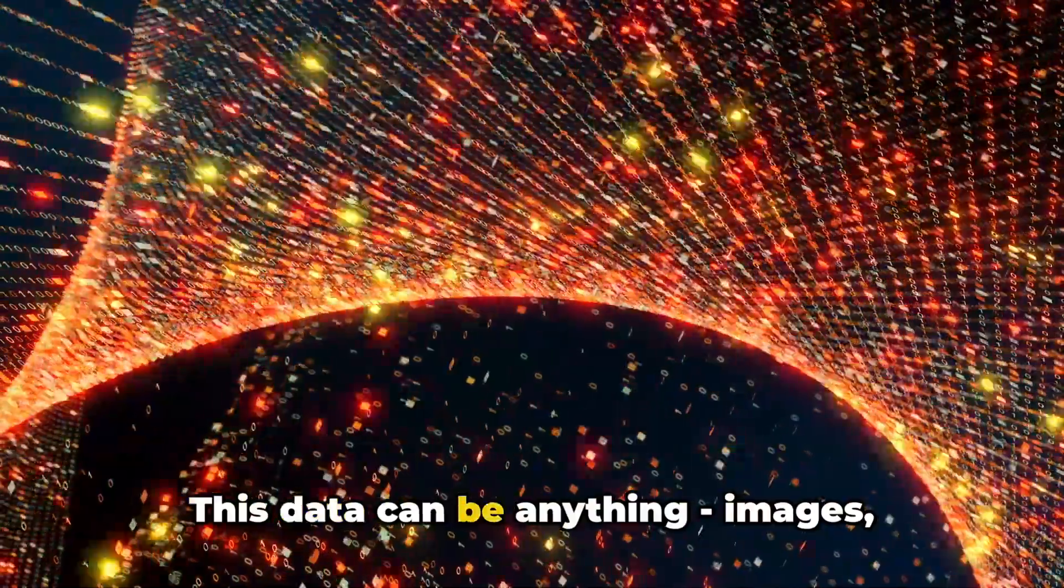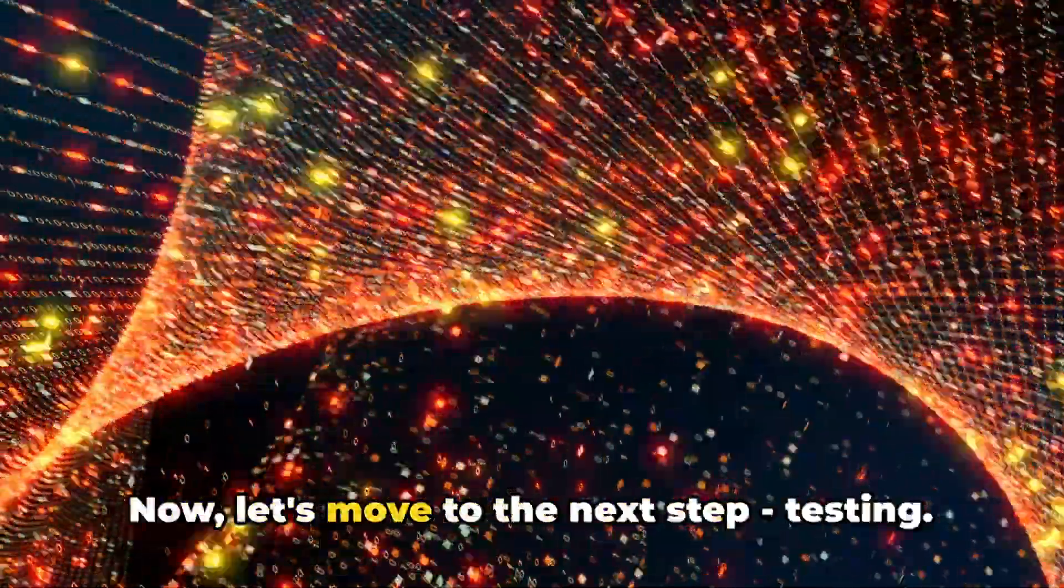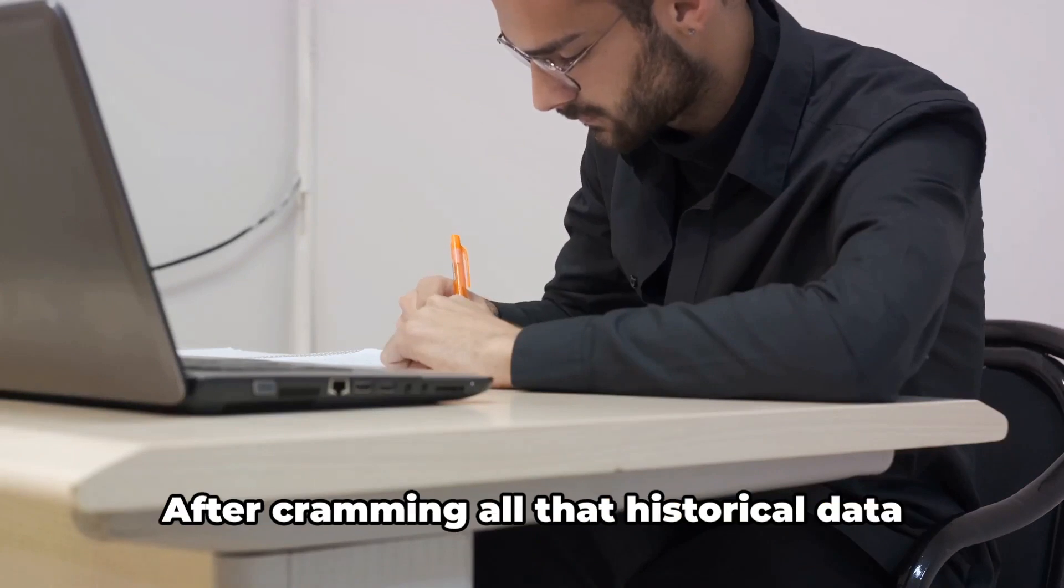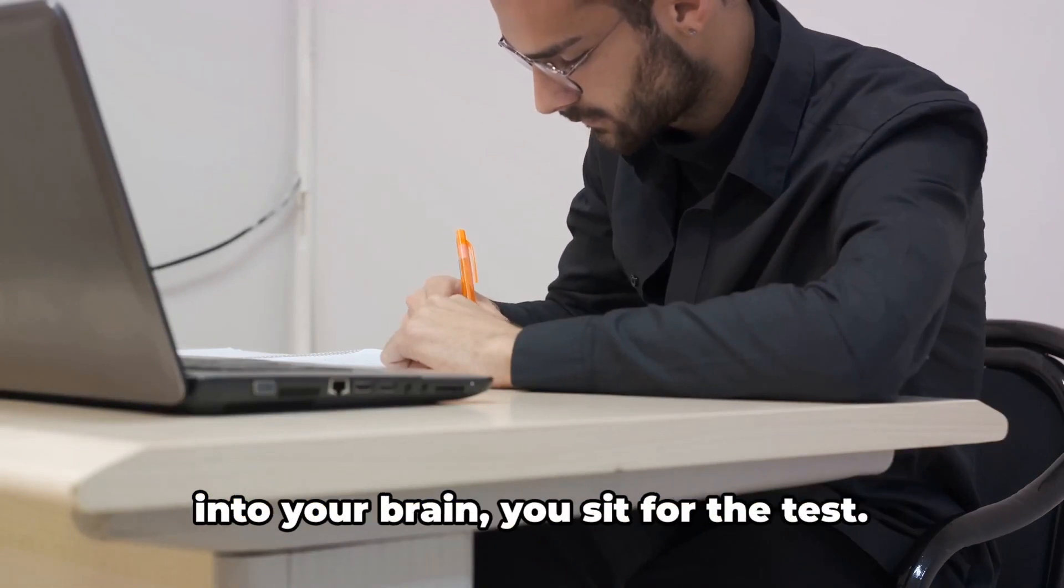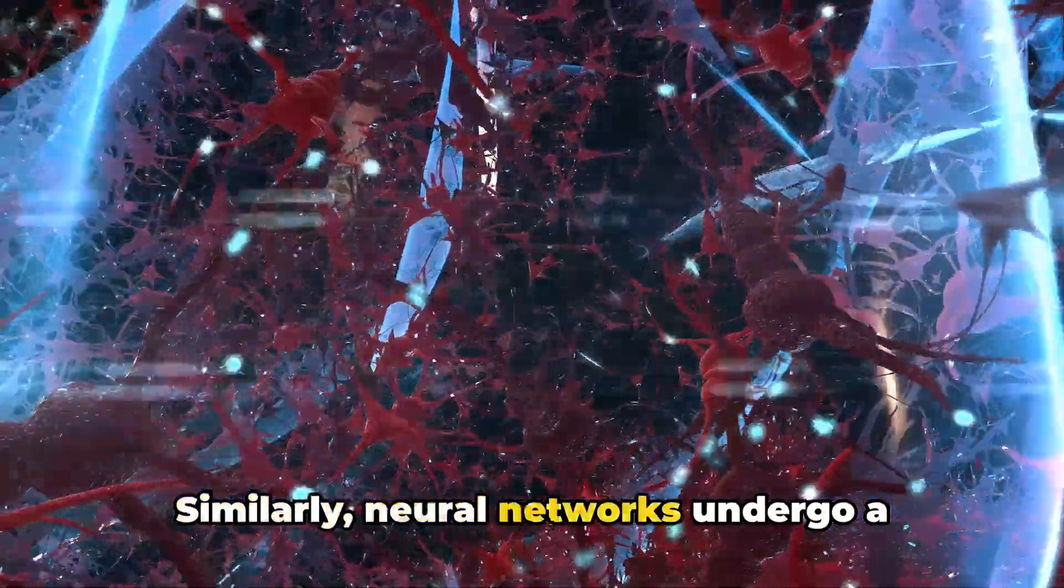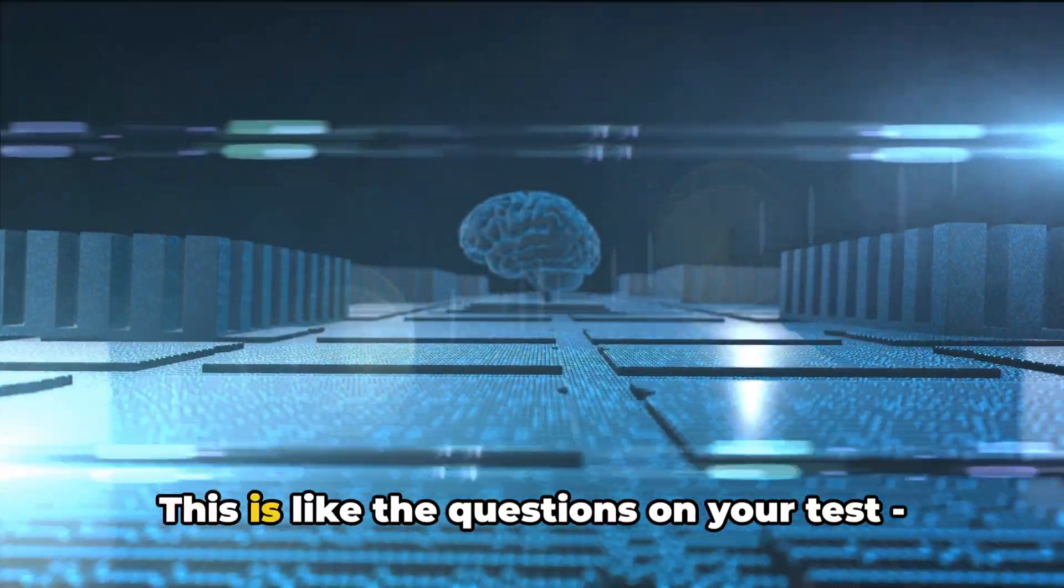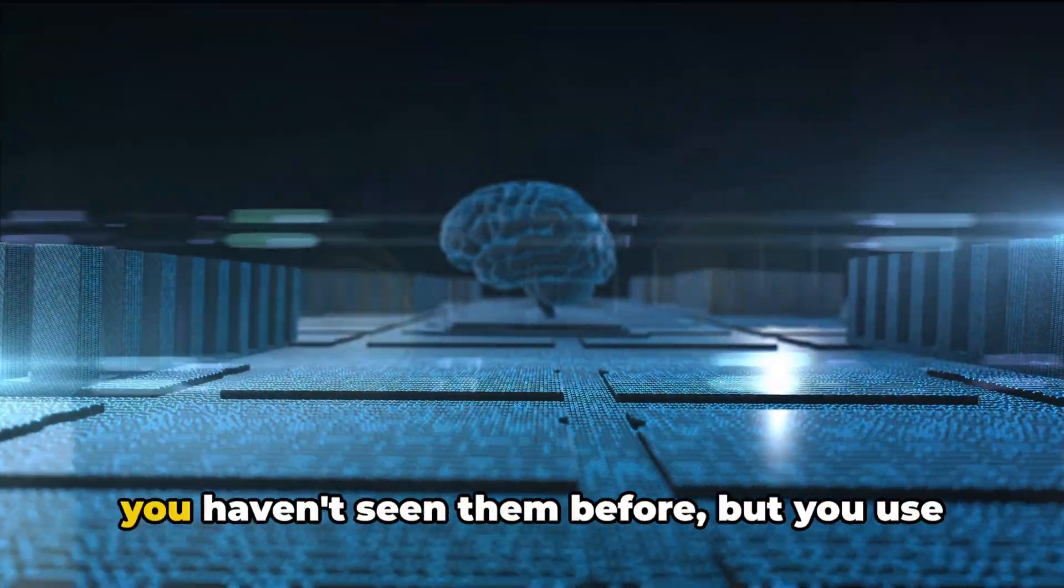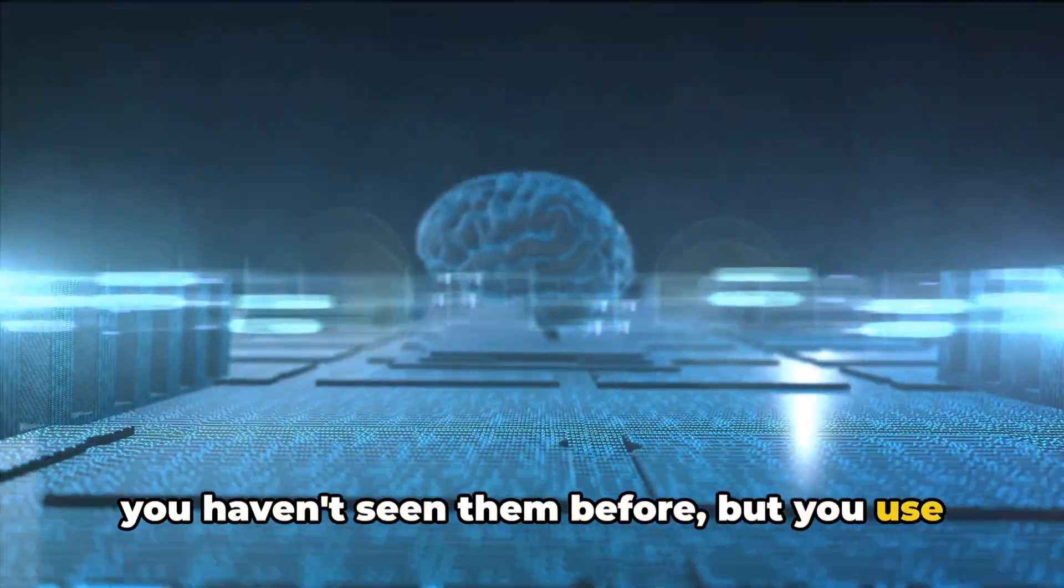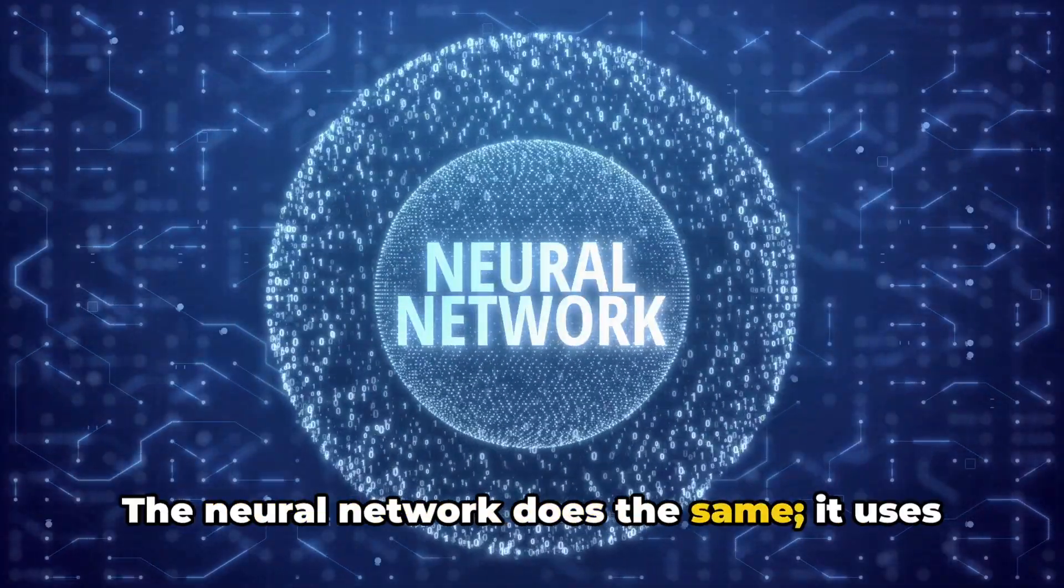This data can be anything: images, sounds, text, you name it. Now let's move to the next step: testing. After cramming all that historical data into your brain, you sit for the test. Similarly, neural networks undergo a testing phase where they're given new data that they haven't seen before. This is like the questions on your test - you haven't seen them before, but you use your understanding to answer them. The neural network does the same. It uses its training to process the new data and make predictions.